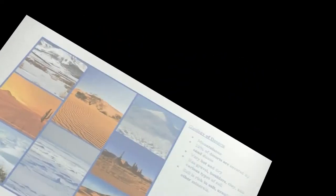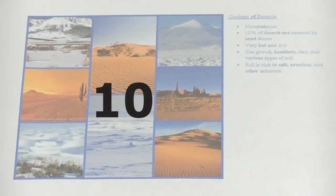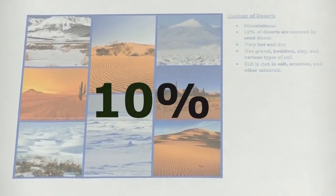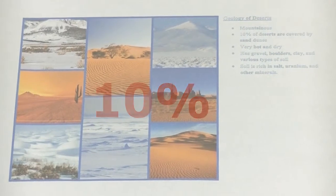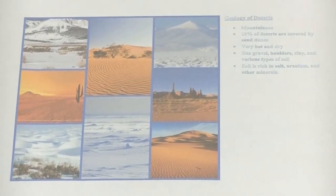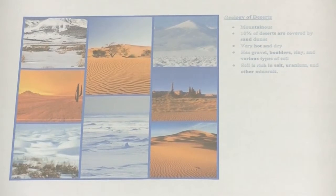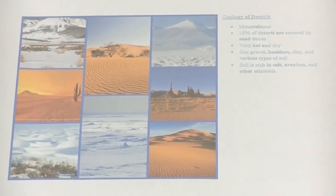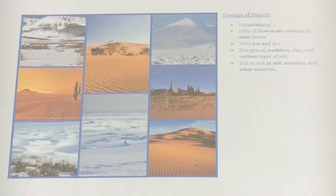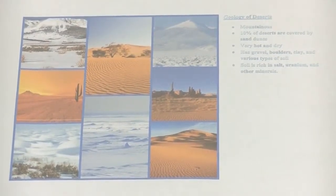The Geology of Deserts: deserts are mountainous and 10% of deserts are covered by sand dunes. They are very hot and dry. Deserts have gravel, boulders, clay, and various types of soil. The soil is rich in salt, uranium, and other minerals.